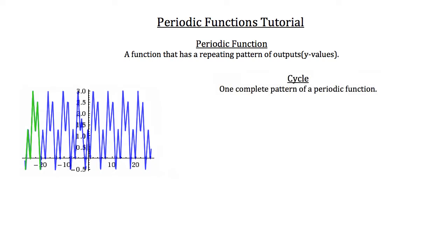Each time that pattern is repeated, we call that a cycle. A cycle is one complete pattern of a periodic function. So that green highlighted portion is one cycle, and each of these individual cycles continue on in that periodic function.